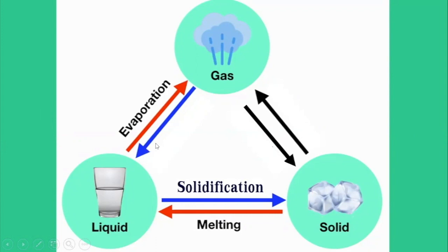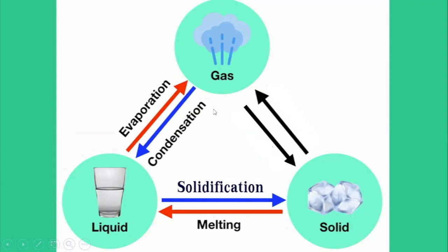And let's reverse — from gas to liquid. From gas to liquid, we decrease heat, we cool down the gas, and we get liquid. When a gas is cooled until a certain level, it may change its state from gas to liquid. This physical change is called condensation. Repeat after me: condensation.